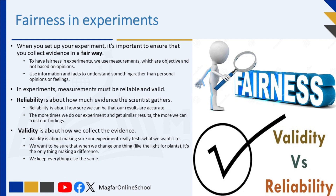In experiments, we want our evidence or measurements to be both reliable and valid. Reliability is about how much evidence the scientist gathers — the more evidence we collect, the more reliable our results will be. To make the test reliable, we repeat the experiments a few times. The more times we do our experiment and get similar results, the more we can trust our findings. It's like if you play a game and get the same score every time — you can be more confident in your skill level.